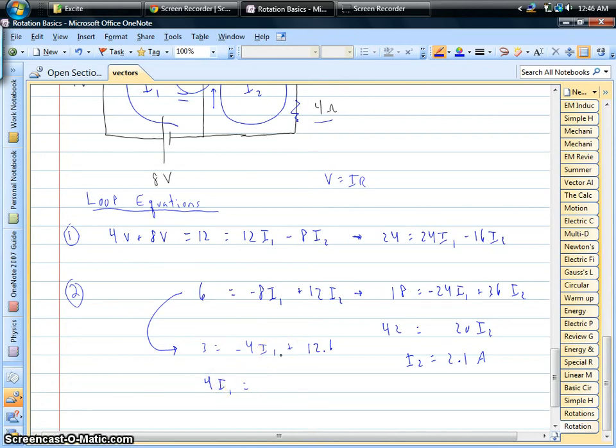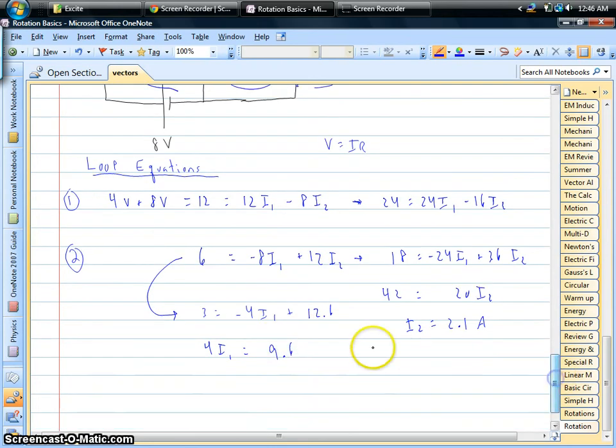And now we can solve for I₁. We'll move the 4I₁ over to the left-hand side. We'll subtract and bring it over, and we can solve for I₁. 9.6 divided by 4 is 2.4 amps.